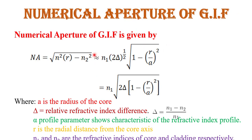Now, the numerical aperture of graded index fiber. Numerical aperture defines the light-gathering power of the fiber — how much light a fiber can gather or keep within the core. Normally, numerical aperture is given by √(n1² − n2²), where n1 is the refractive index of the core and n2 is the refractive index of the cladding. But for graded index fiber, the numerical aperture is given by √(n²(r) − n2²), since the refractive index of the core varies with radial distance r, while n2 is the constant cladding refractive index.